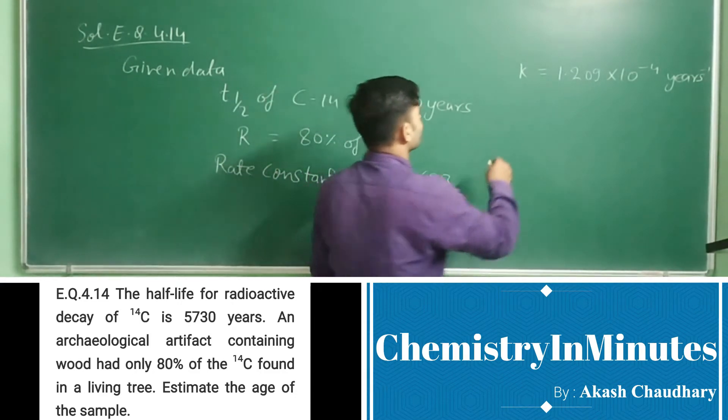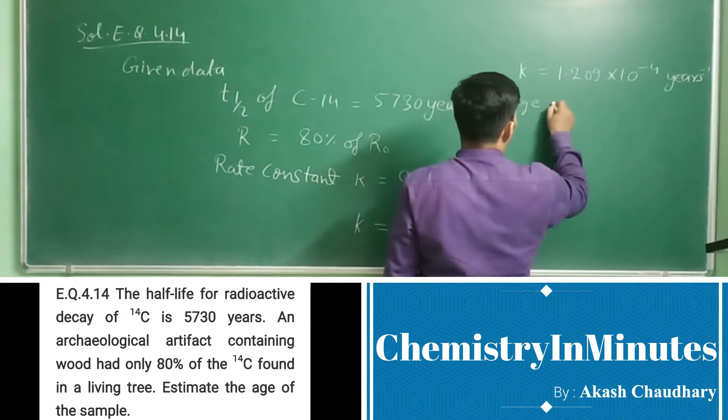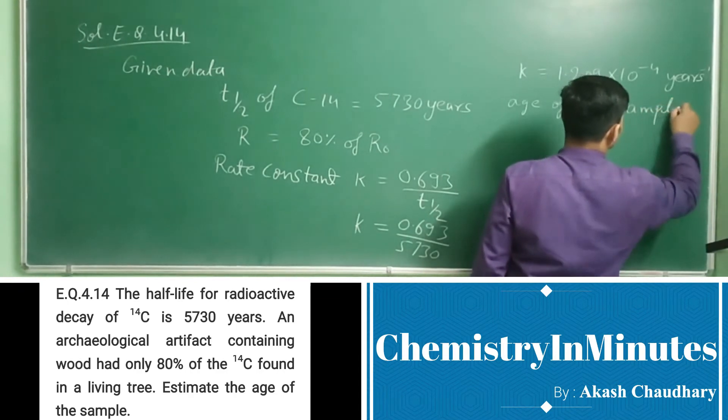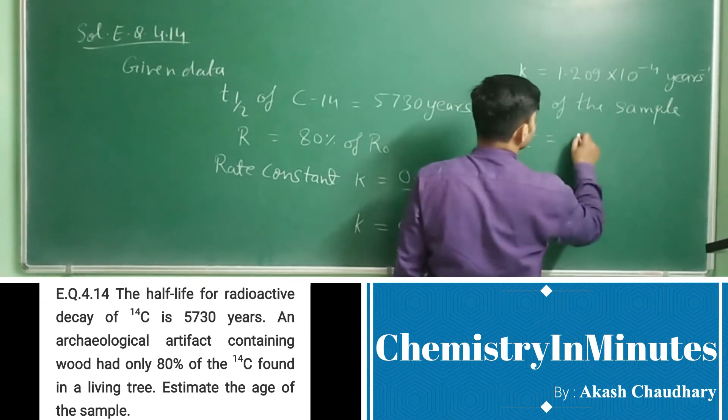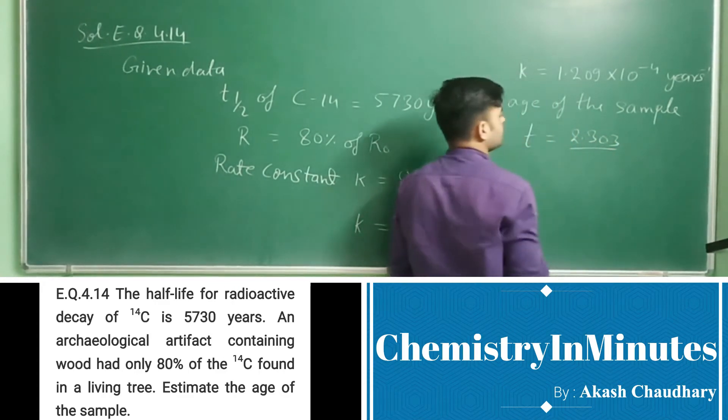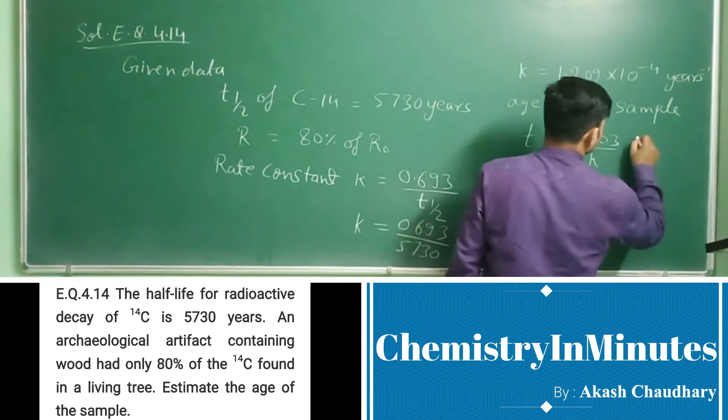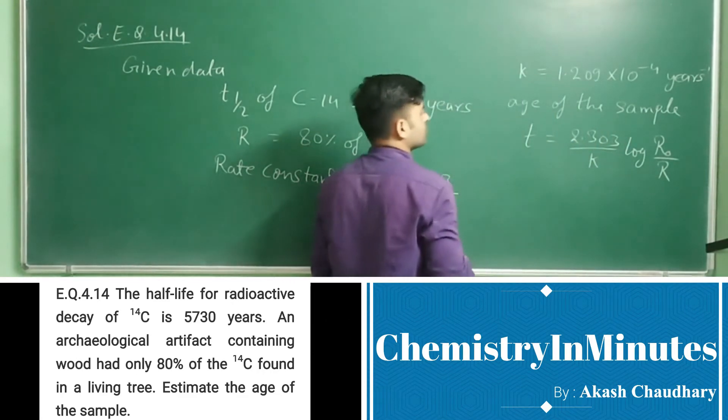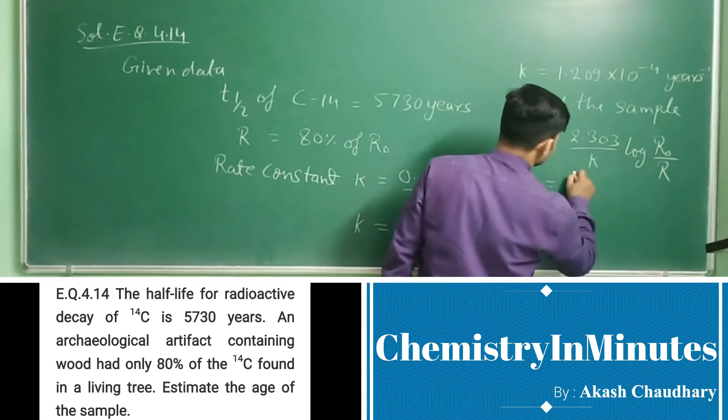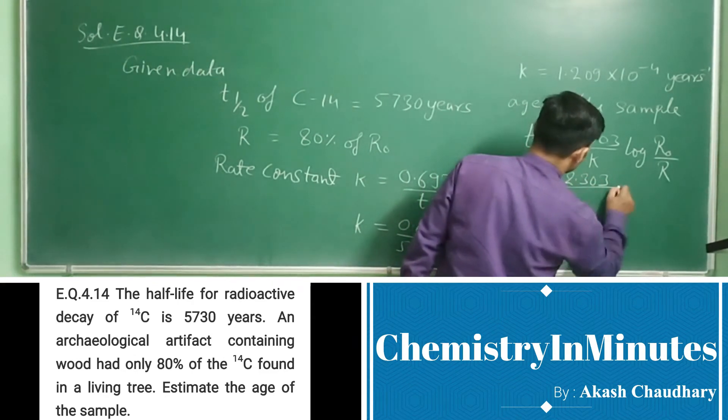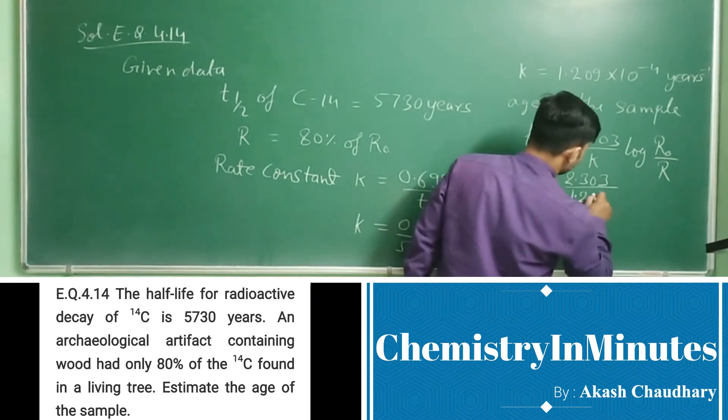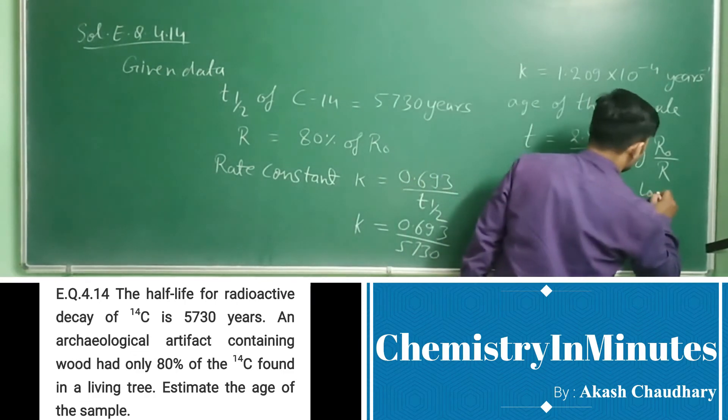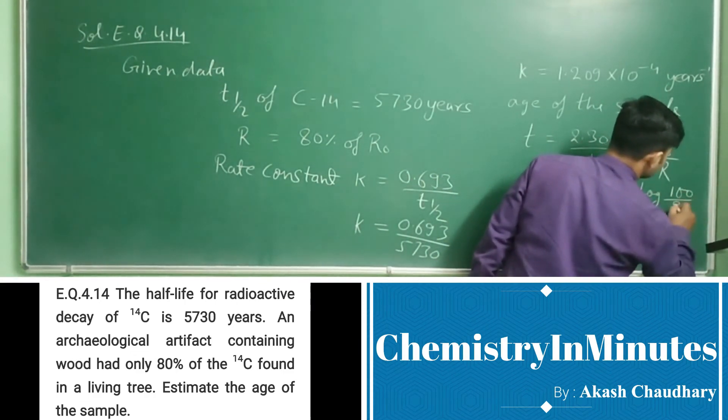Now age of the sample. T equal to 2.303 upon K log R0 upon R. Now let's put the values: t equal to 2.303 upon 1.209 into 10 to the power minus 4, log 100 upon 80.